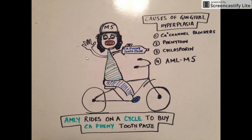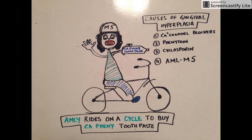Her helmet has the number M5 written on it. You can also remember it by noticing that she's saying hi to you with five fingers — five fingers telling you M5. So Emily saying hi = AML M5.